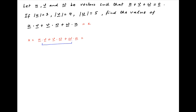Combining the first and the last term, x can be written as u dot in brackets v plus w, plus v dot w. Now, we are given that the sum of vectors u, v, and w is equal to the null vector. Therefore, v plus w is equal to minus u.